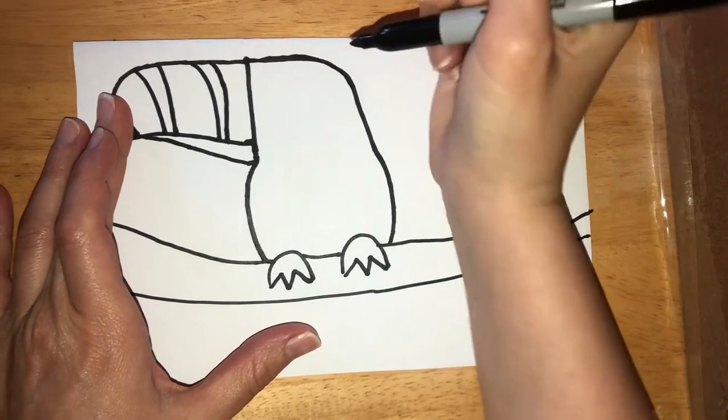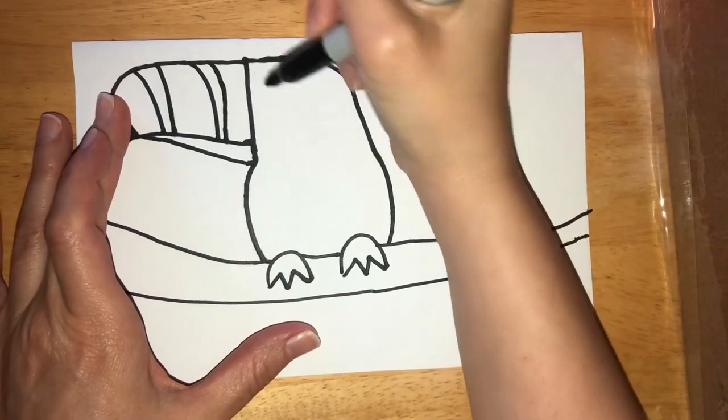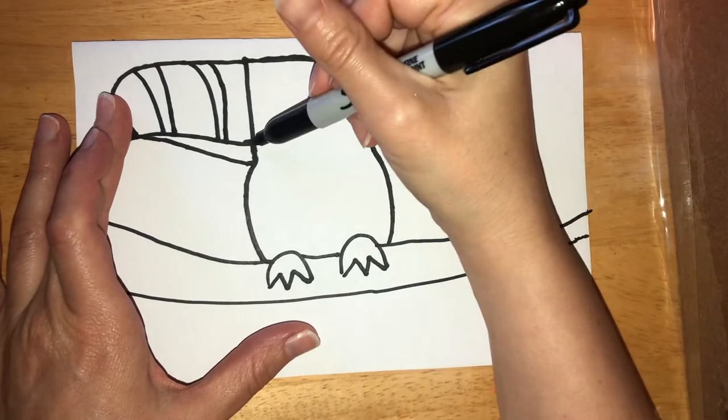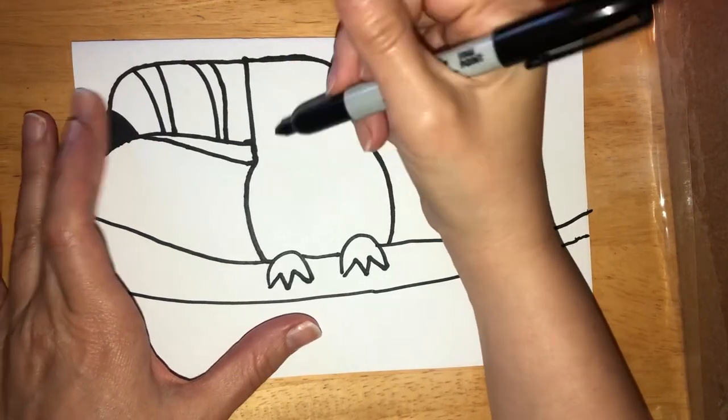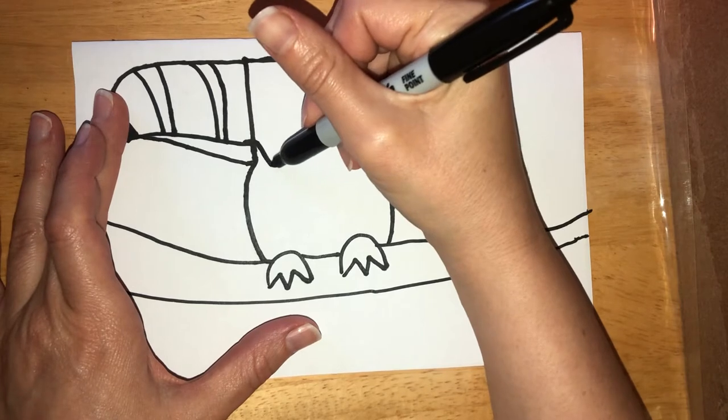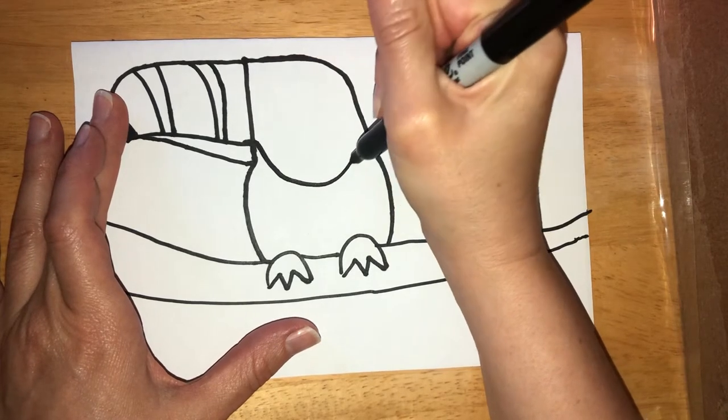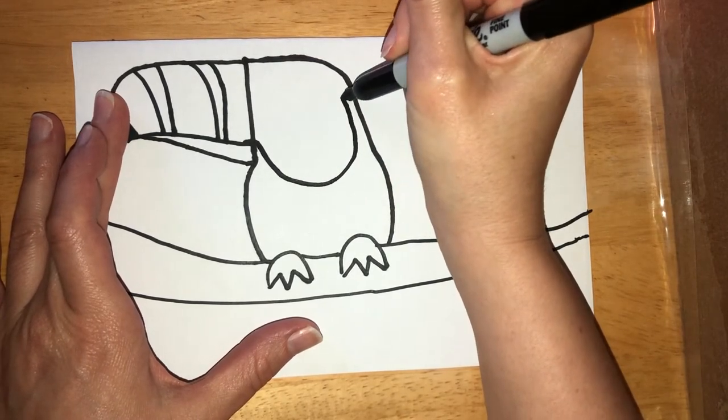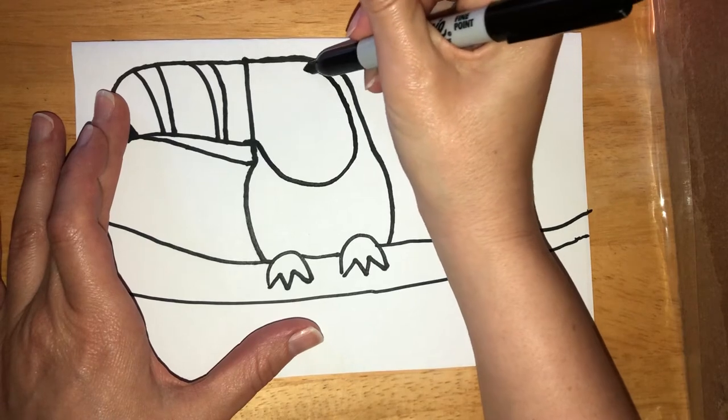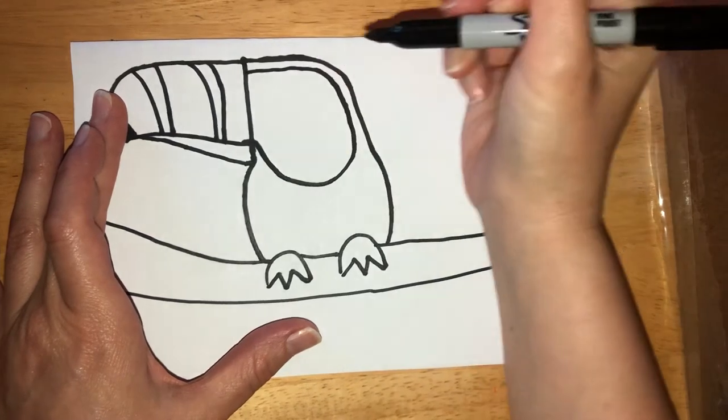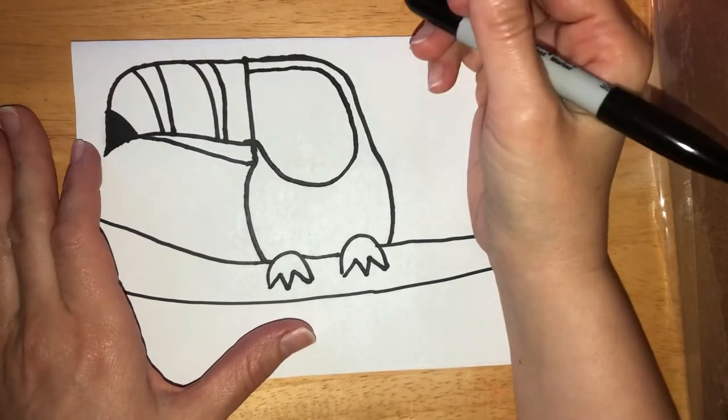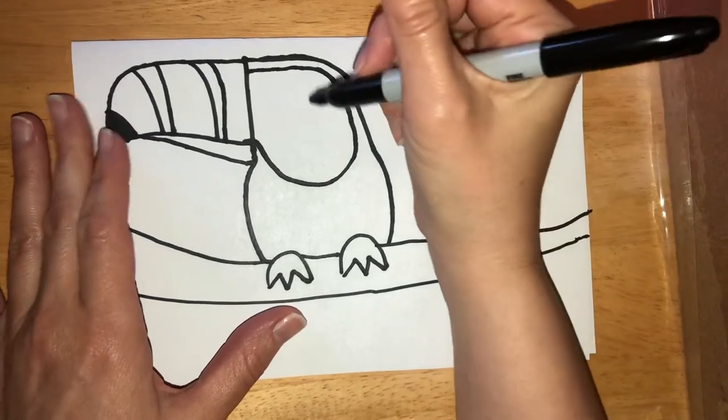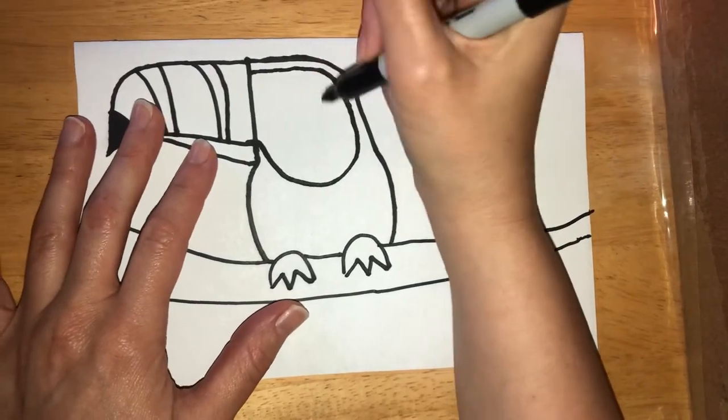All right, so going from this middle area between the two parts of his mouth, I'm going to start with a curve and go almost to the end and go back and follow the shape of that line. Good. Now I want to work on his eye.